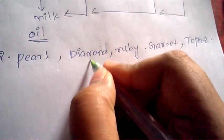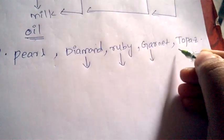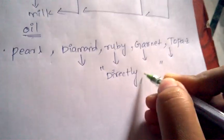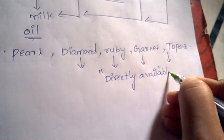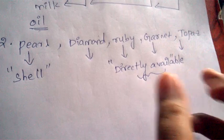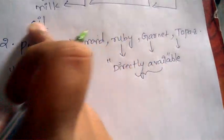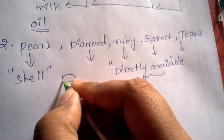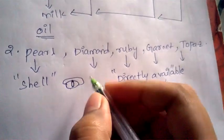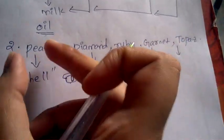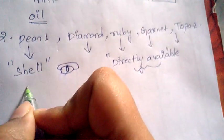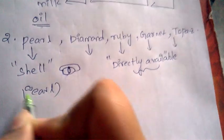Diamond, ruby, garnet, and topaz are formed directly from nature and are available directly. But pearl comes from a shell — it is formed inside the shell. So pearl is unique because the others are found directly, whereas pearl is formed inside a shell. Therefore, the answer is pearl, as it belongs to a different category compared to the other options.